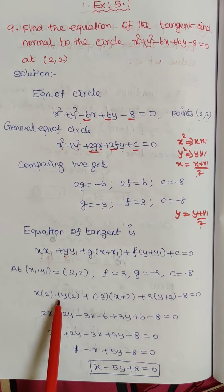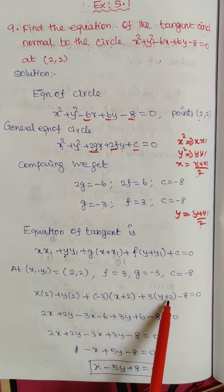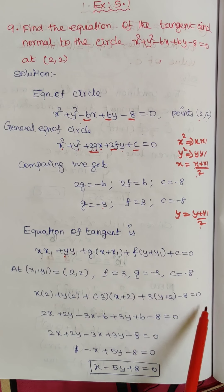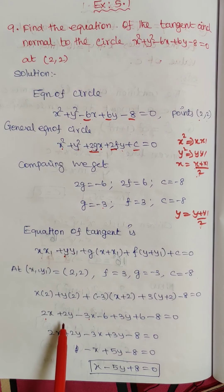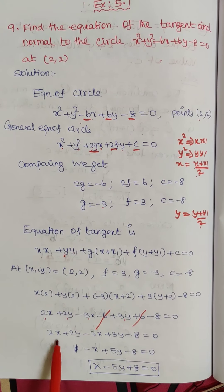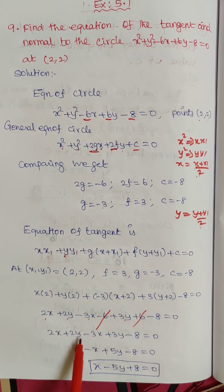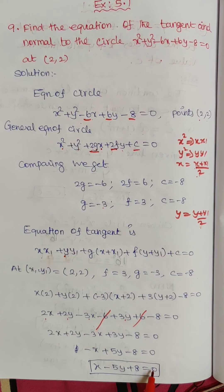So now: 2x plus 2y minus 3x minus 6 plus 3y plus 6 minus 8 equals 0. Combining like terms: 2x minus 3x gives minus x, and 2y plus 3y gives 5y. The minus 6 and plus 6 cancel. So we get minus x plus 5y minus 8 equals 0, which gives the equation of tangent as x minus 5y plus 8 equal to 0.